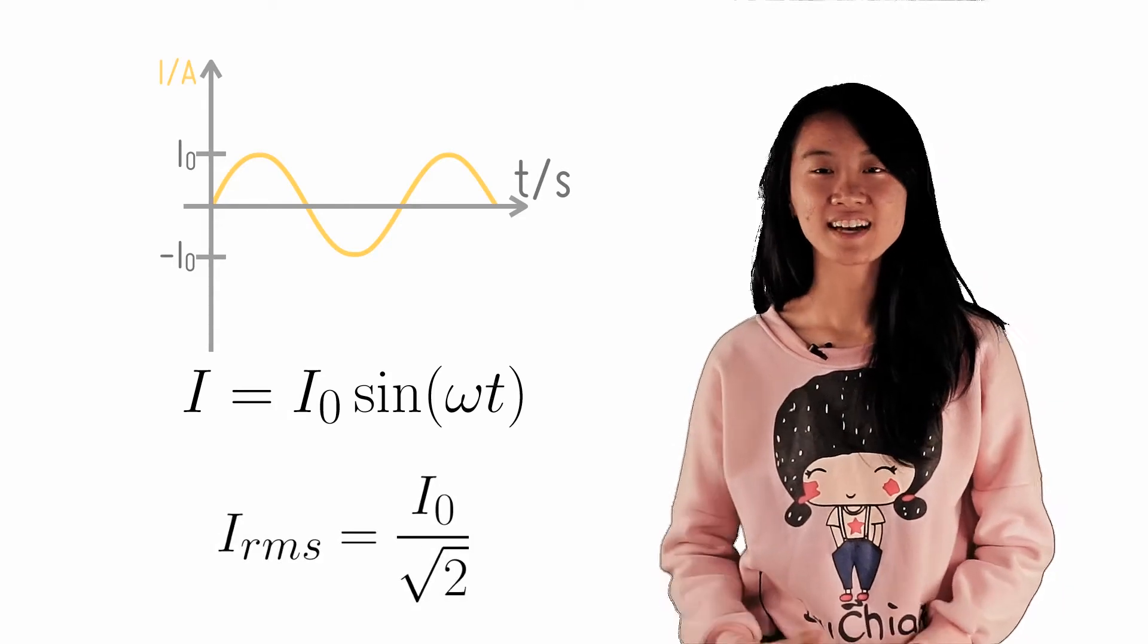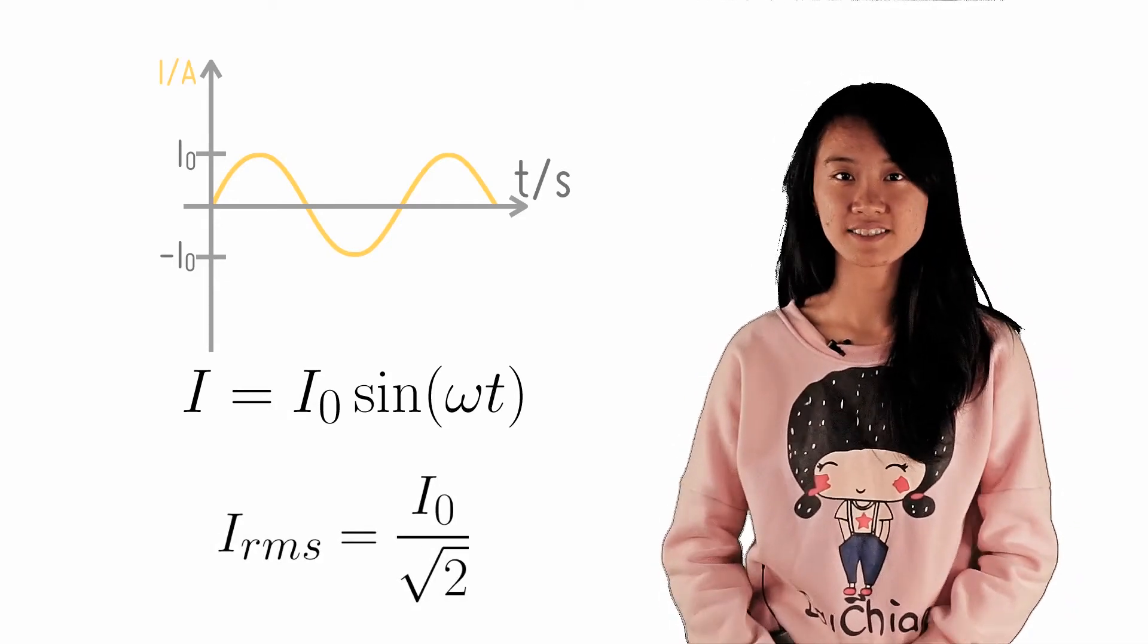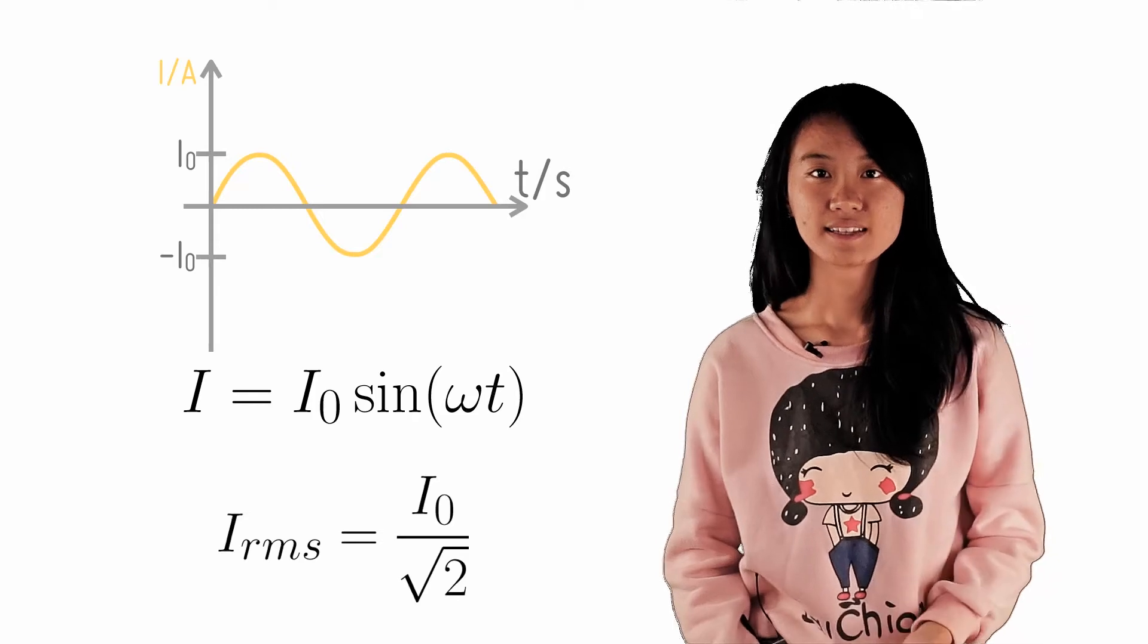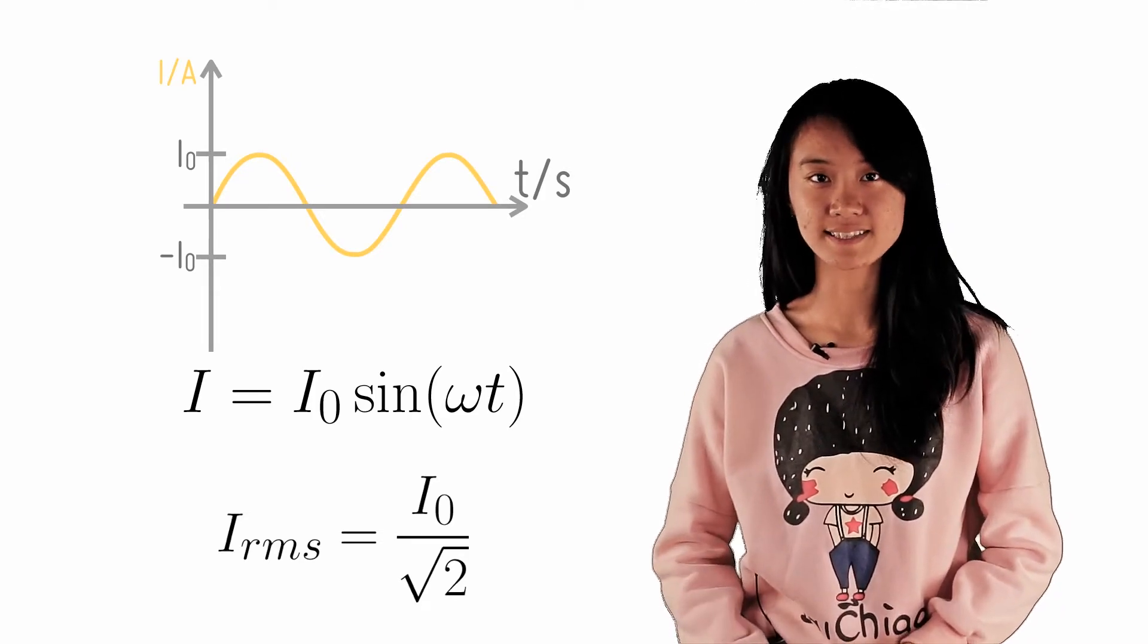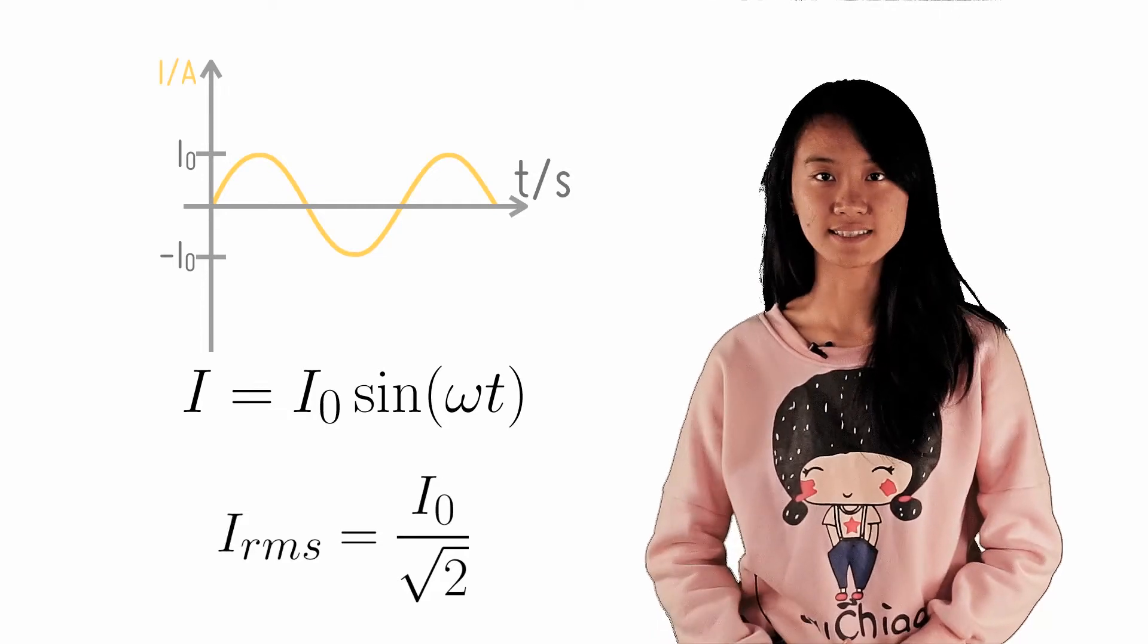In the previous checkpoint, you have learned how to calculate the RMS current in your sinusoidal AC. Now, in this checkpoint, we will apply this to the concept of power in your sinusoidal AC source, as covered in the earlier lessons.